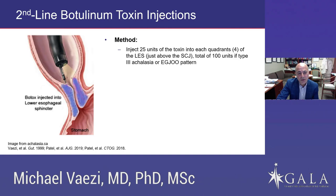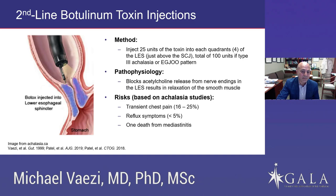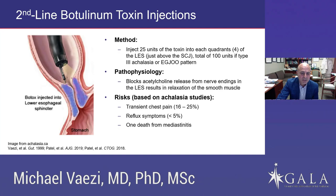My method: I use 100 units of Botox, injecting 25 units into each quadrant of the LES for type 3 or EGJ outflow obstruction. I would potentially use about 40 units into the LES and the rest along the esophagus for spasm. Botulinum toxin works by blocking acetylcholine release — and remember, the hypercontractile state is because of contraction due to acetylcholine, so Botox essentially blocks that. Risks include transient chest pain post-injection, reflux symptoms, and rarely mediastinitis — one death has been reported, but it is very rare.